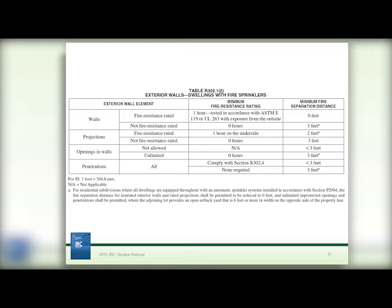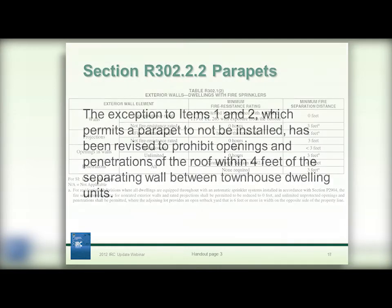The 2009 IRC introduced requirements for automatic fire sprinkler systems in all one and two family dwellings and townhouses. When a sprinkler system is installed, the 2012 IRC now permits non-rated walls that are not less than 3 feet from the lot line, a dimension previously prescribed in earlier editions of the code for unrated walls.